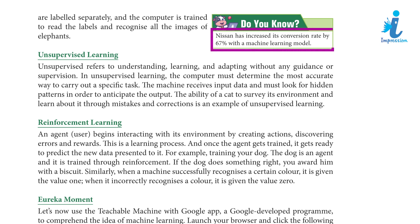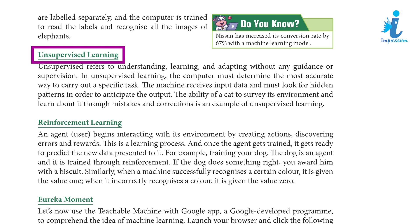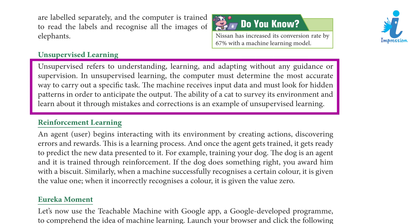Did you know? Nissan has increased its conversion rate by 67% with a machine learning model. Unsupervised Learning: Unsupervised refers to understanding, learning, and adapting without any guidance or supervision. In unsupervised learning, the computer must determine the most accurate way to carry out a specific task. The machine receives input data and must look for hidden patterns in it. The ability of a cat to survey its environment and learn about it through mistakes and corrections is an example of unsupervised learning.